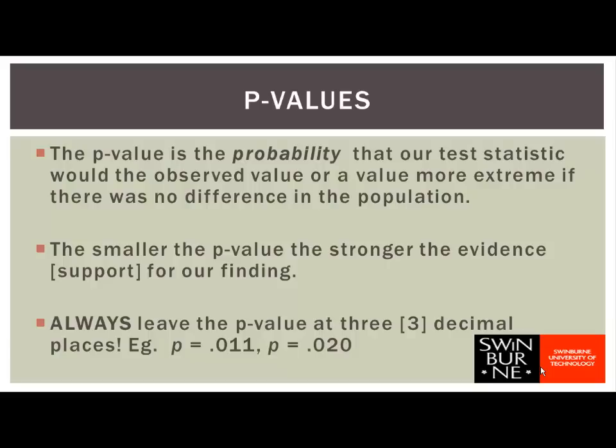When we quote the p-value, we always give it to three decimal places, and most of the time we'll give it exactly as it's given in the SPSS output. For example, p = 0.011 or p = 0.020. The one exception is when SPSS gives a p-value of 0.000, in which case we report p less than 0.001.